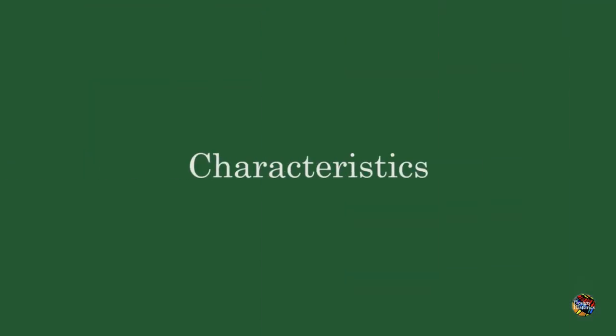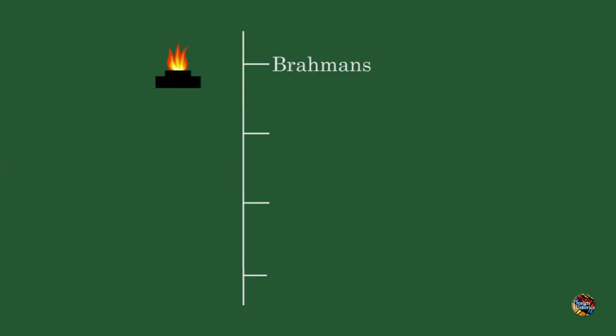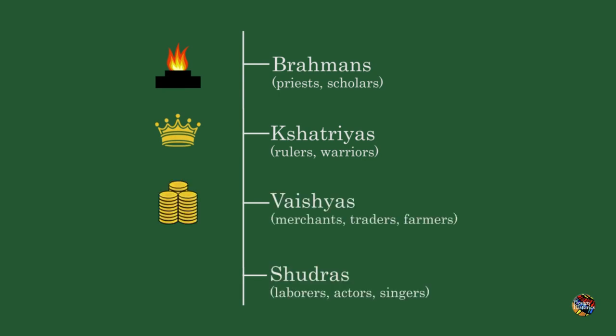Now let's talk about some characteristics of the Vedic age. The Varna system was basically a hierarchical social structure where classes were formed based on people's occupations. Brahman were the priests and scholars. Kshatriya was the class of rulers and administrators. Vaishya was the class of traders, merchants, and farmers. And Shudra was the class under which came the remaining population.